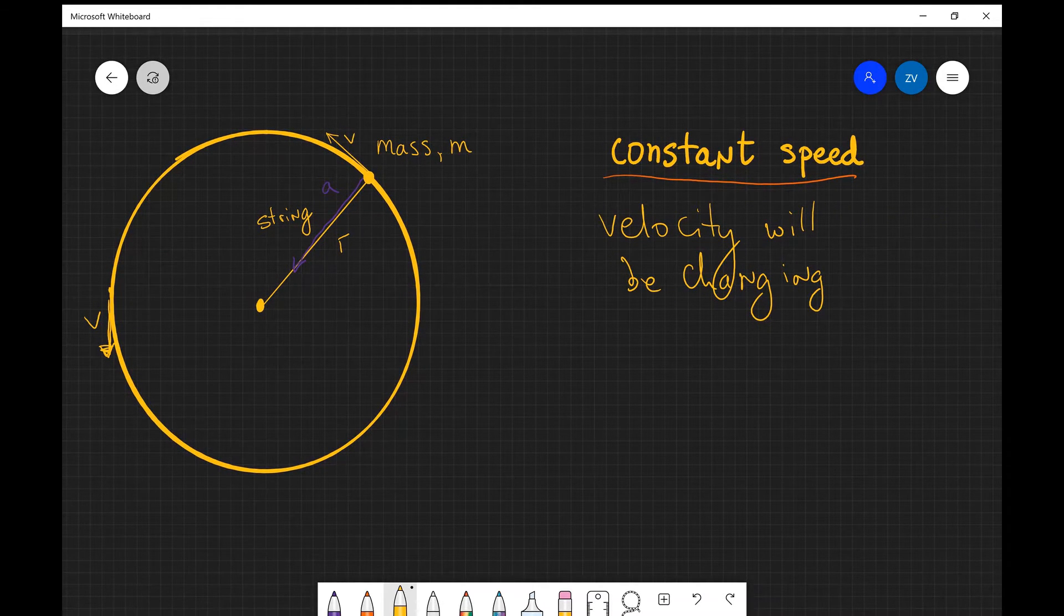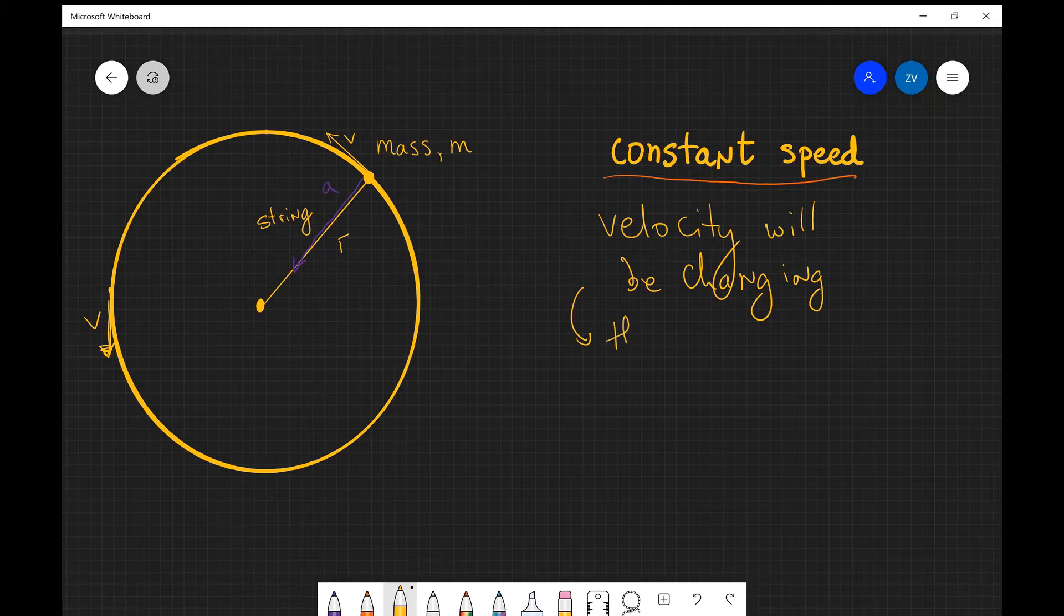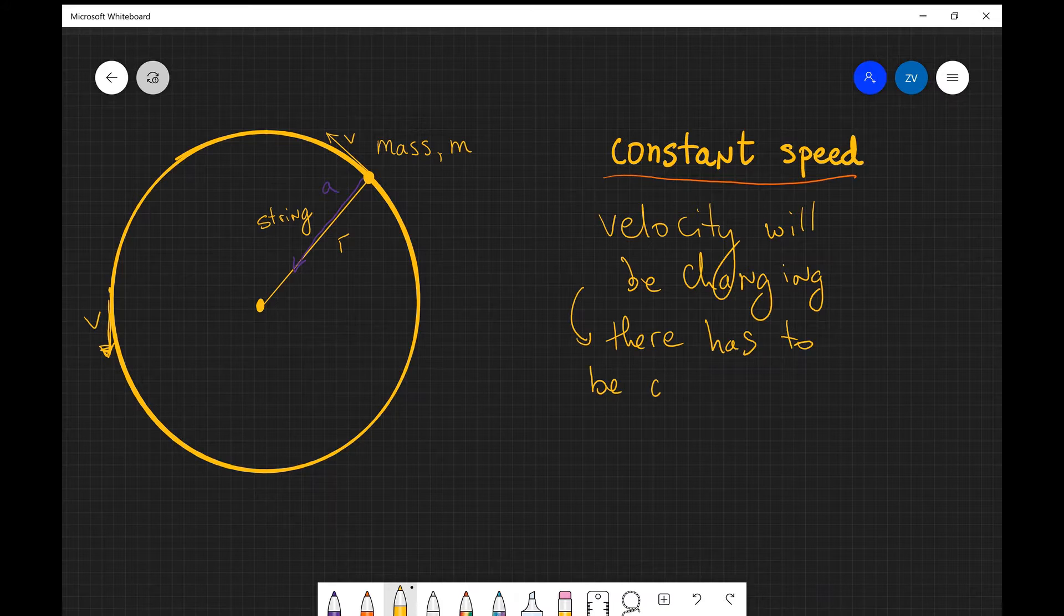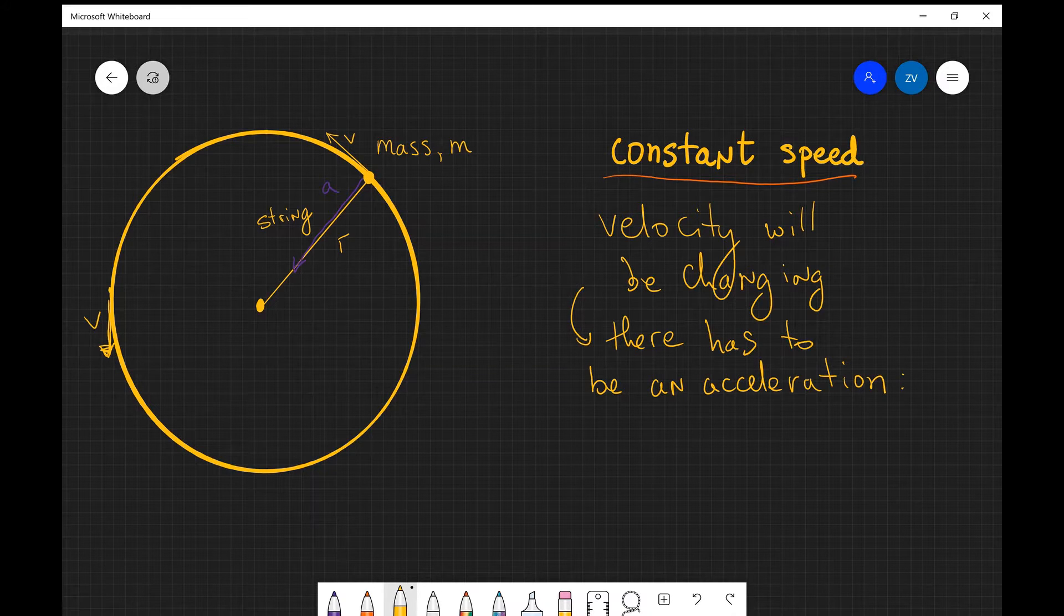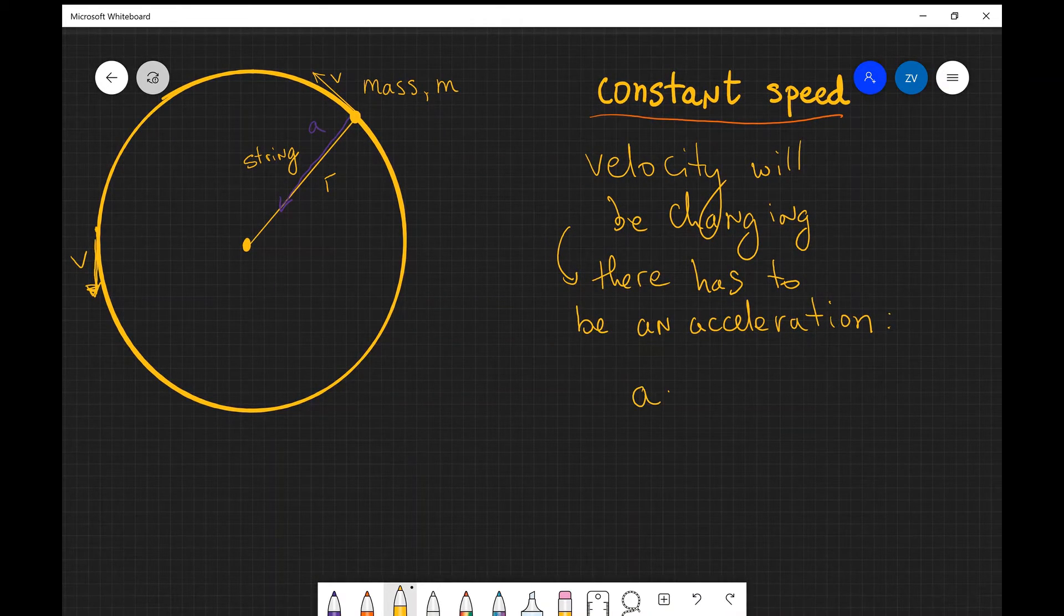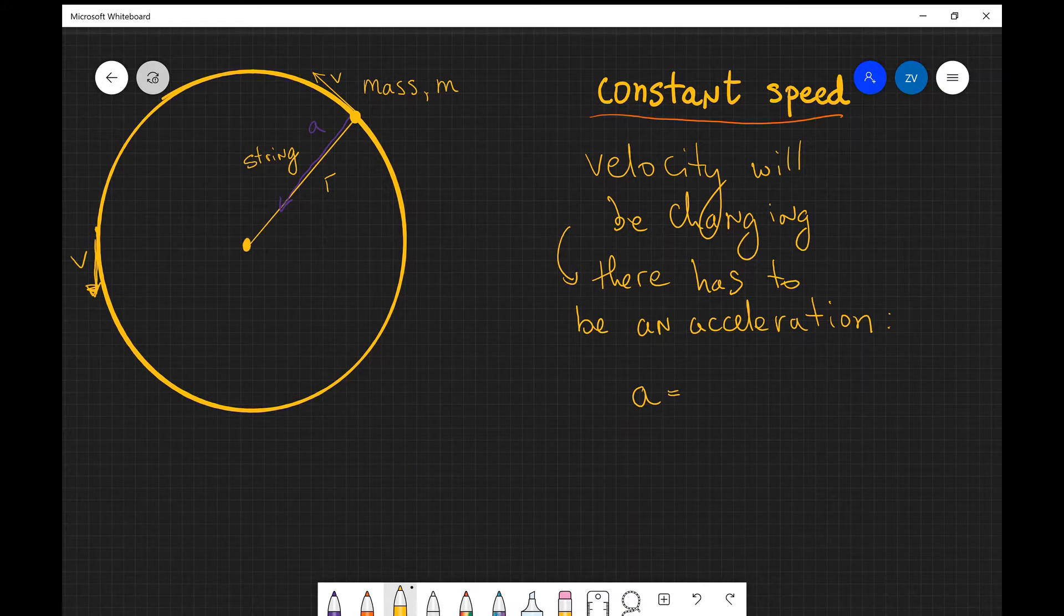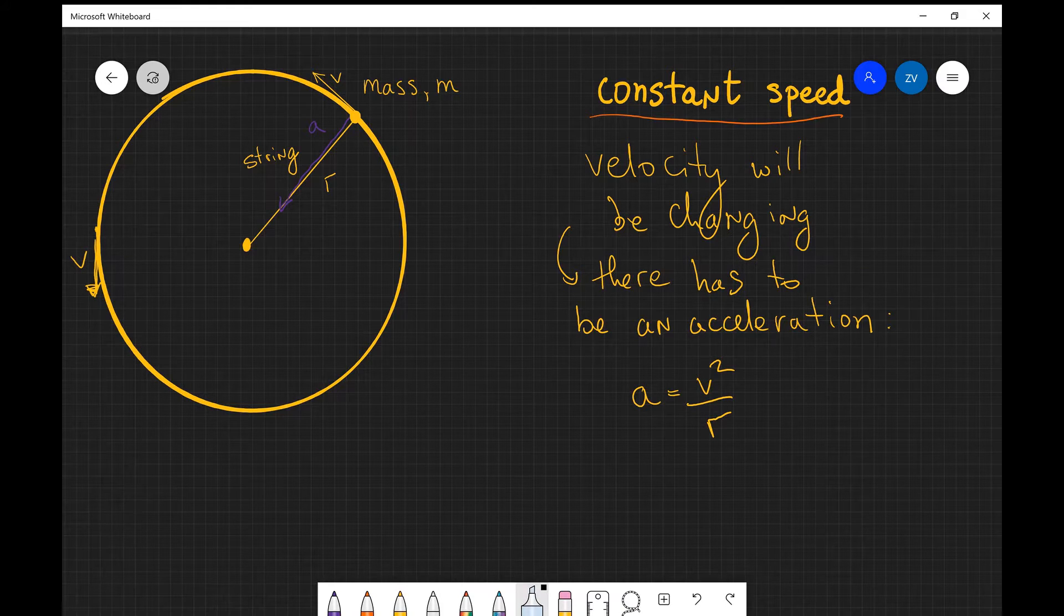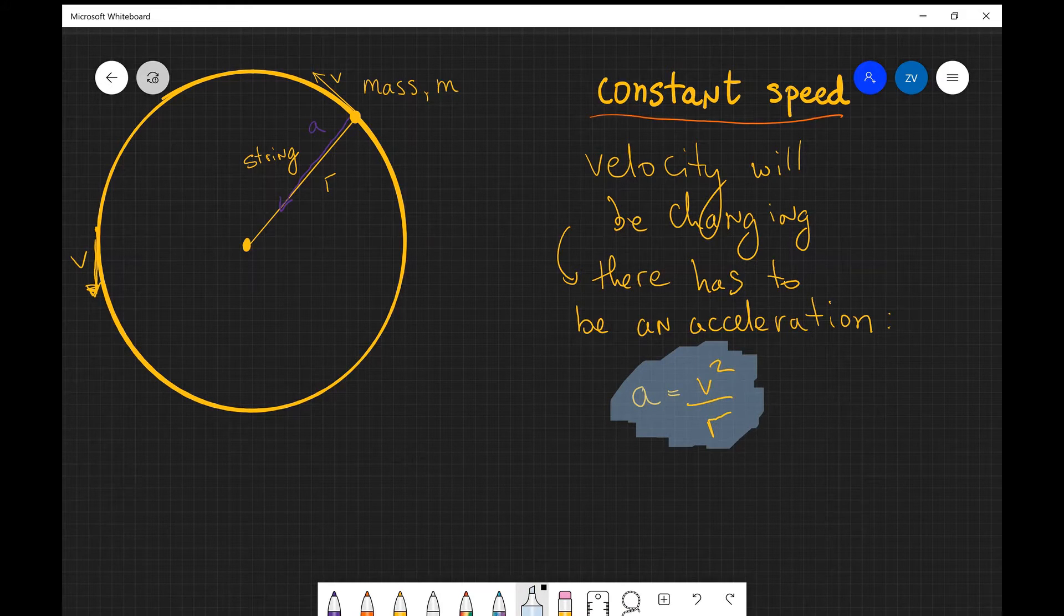So velocity will be changing. If that's true, there has to be an acceleration. We can write that there has to be an acceleration. And in fact, the value of this acceleration, the magnitude of it, is given by the equation that the centripetal acceleration is equal to v squared over r. If you're curious how this formula is derived, please have a look at my challenge video which guides you through the derivation of this formula.